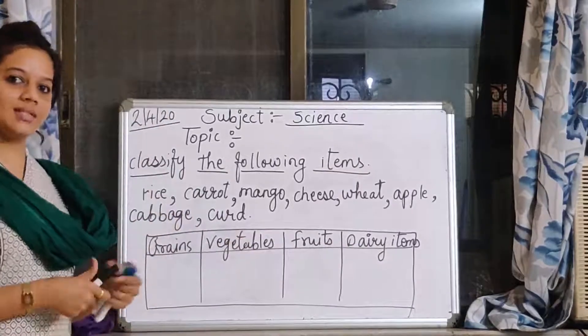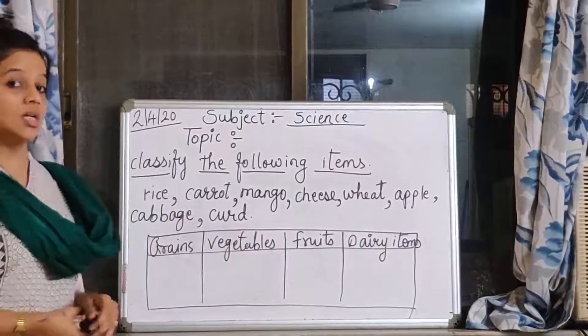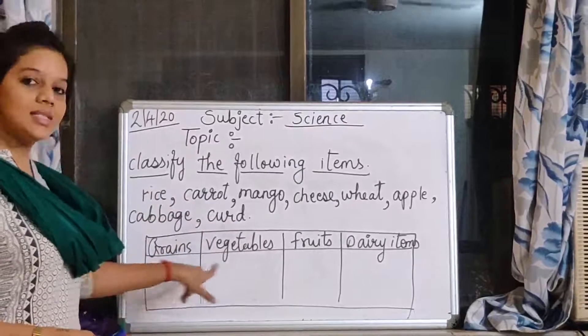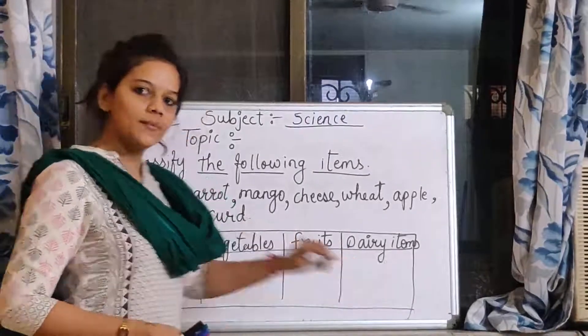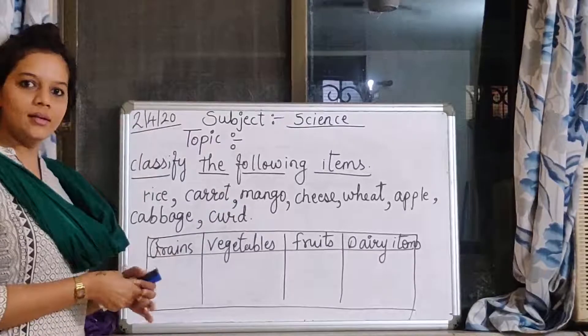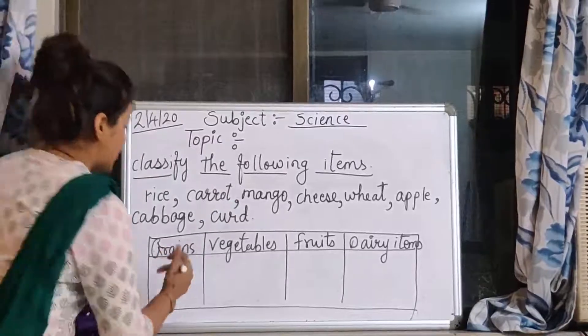Now the first item is rice. Rice we have to put it in which column? Grains, vegetables, fruits or dairy items? Yes, we have to put it in grains. So rice is a grain.